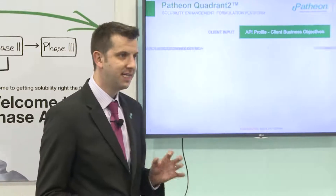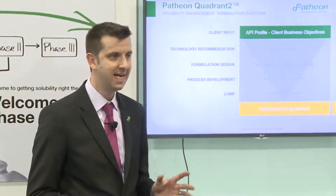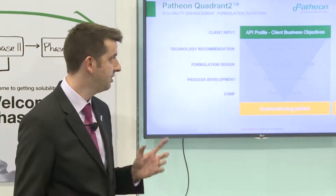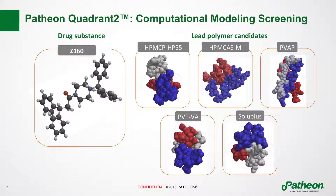We had a talk yesterday that took us through the Patheon Quadrant 2 approach, and I'm not going to go through that in detail this afternoon, but to say this is the starting point for any spray dried project for us. This allows us to do some in silico modelling to really understand the molecule before we get into the lab. The first step in this case study involves using the Patheon Quadrant 2 computational modelling screening to look at the molecule in question and screen it against various different polymers that we might use in spray drying.